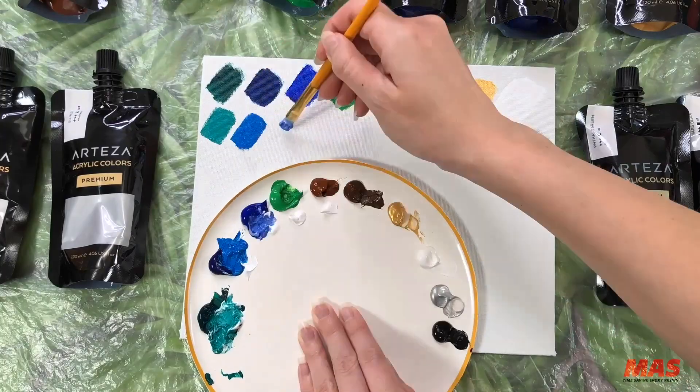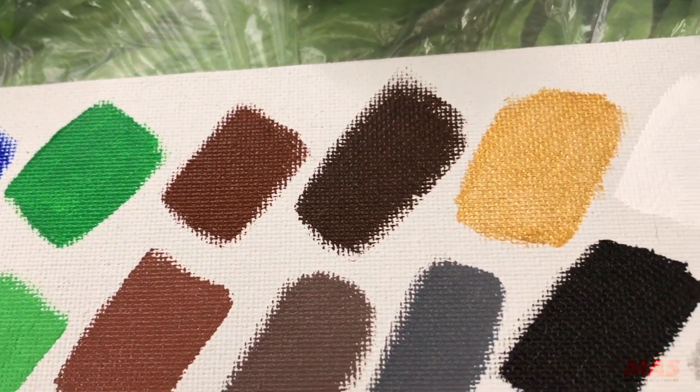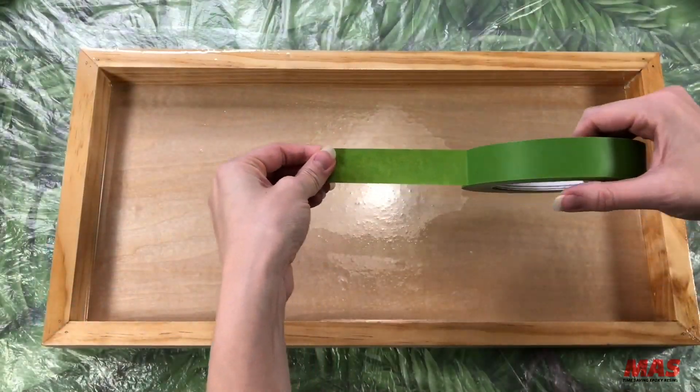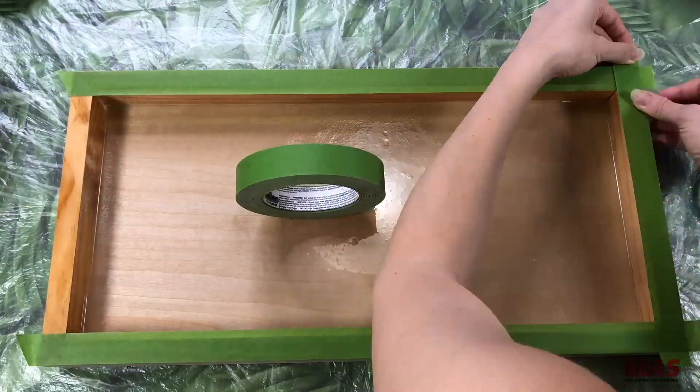Once your paints are swatched and you picked the perfect color scheme make sure to tape off the bottom edge of your panel for an easy resin drip removal.